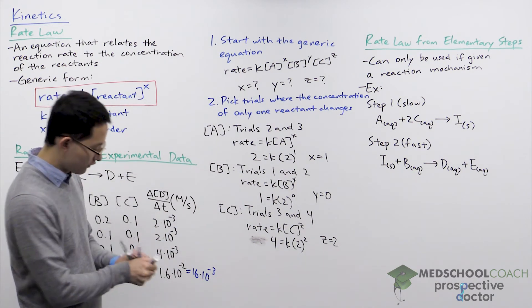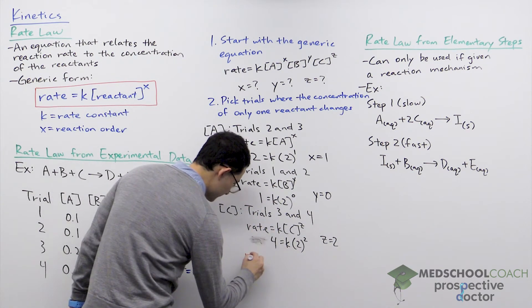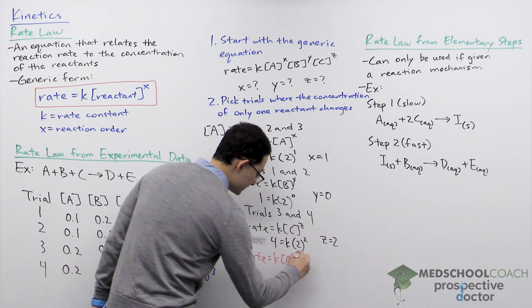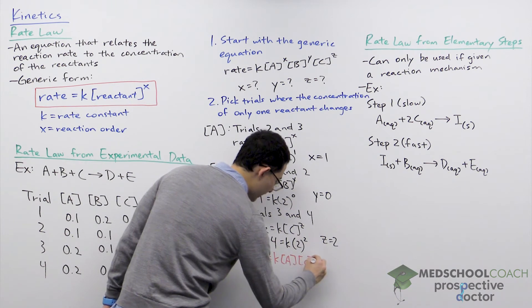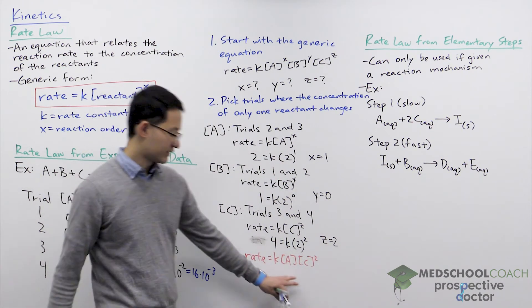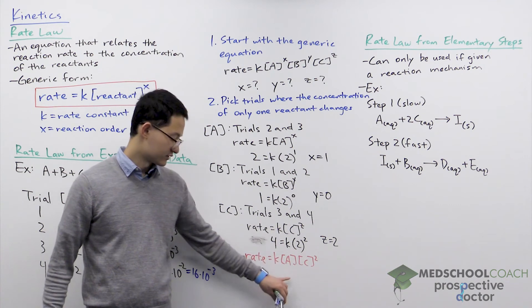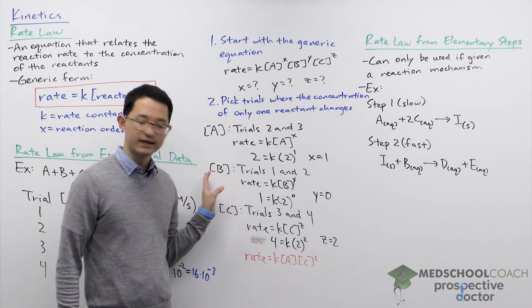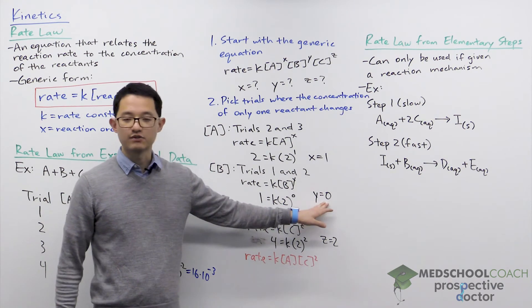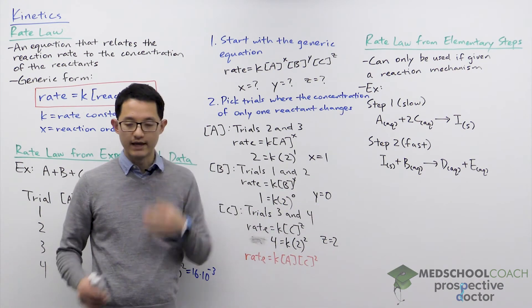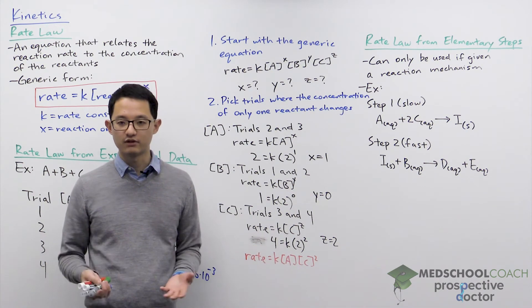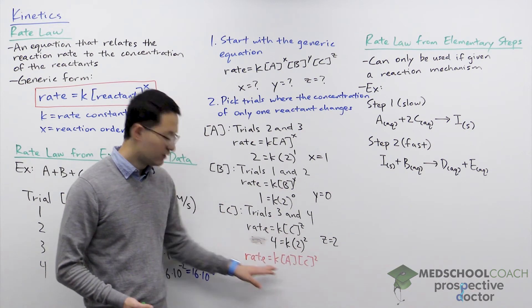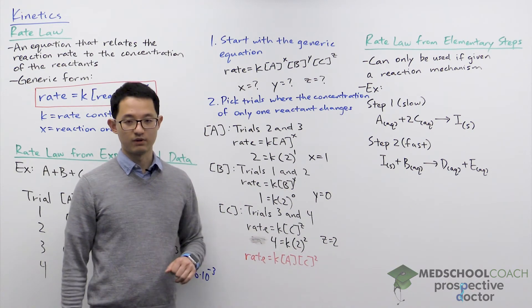Our overall rate law is: rate equals K times [A]¹ times [C]². Note that we don't need to write the exponent of one explicitly. We also exclude B because it has an exponent of zero — whatever its value, it's always raised to the power of zero, which gives one. This rate law is the answer using experimental data.